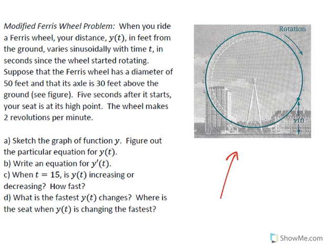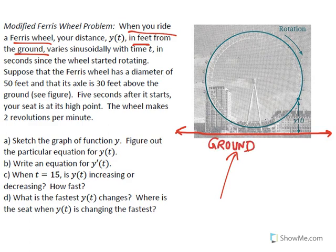When you ride a ferris wheel, your distance in feet from the ground varies sinusoidally with time t in seconds since the wheel started rotating. When you're at the very top of the ferris wheel, you'll be the highest above the ground. When you're at the very bottom, you'll be at the lowest height above the ground.